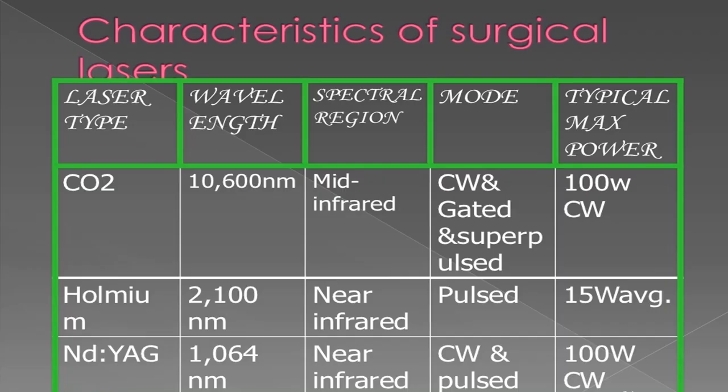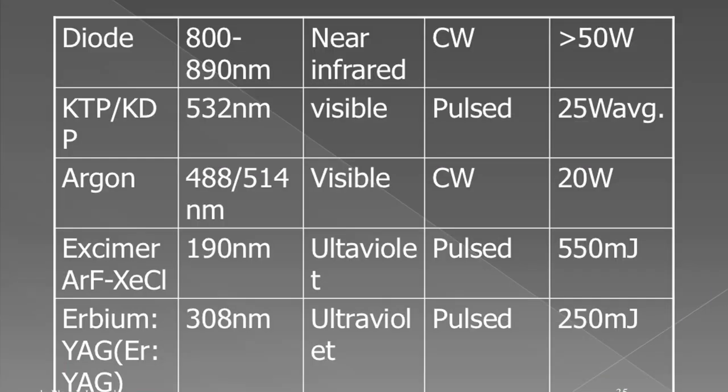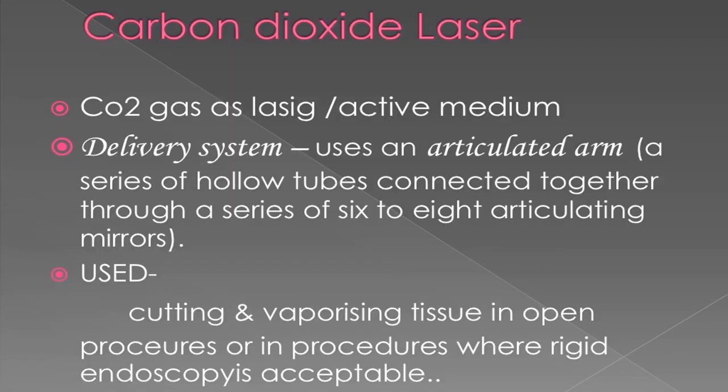Laser types used in endodontics by wavelength and mode: CO2 at 10,600 nm infrared, gated CW and superpulsed, up to 100W; Nd:YAG at 1064 nm near-infrared, pulsed/CW, up to 100W; diode at 800–890 nm near-infrared, CW, up to 50W; KTP at 532 nm visible, pulsed, up to 25W; argon at 488–514 nm visible, CW, up to 20W; and excimer at 190 nm ultraviolet, pulsed, up to 550 millijoules.